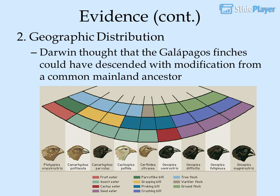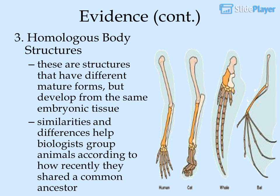Evidence 2 — geographic distribution: Darwin thought that the Galapagos finches could have descended with modification from a common mainland ancestor. Evidence 3 — homologous body structures: these are structures that have different mature forms but develop from the same embryonic tissue. Similarities and differences help biologists group animals according to how recently they shared a common ancestor.